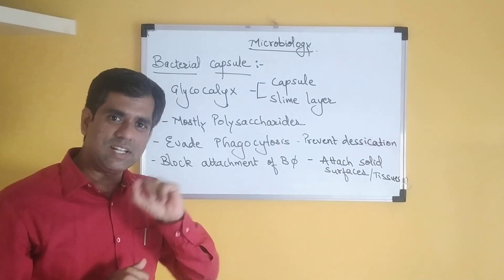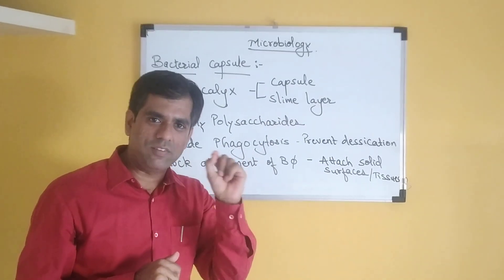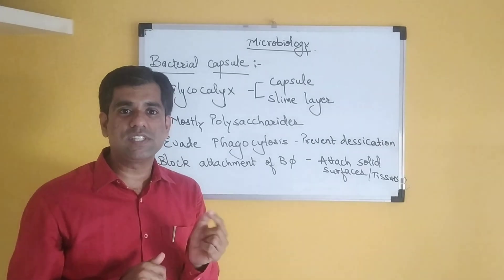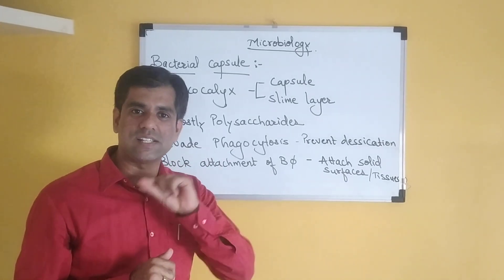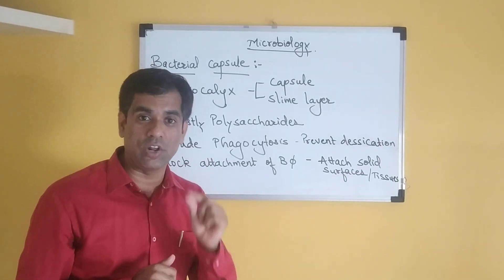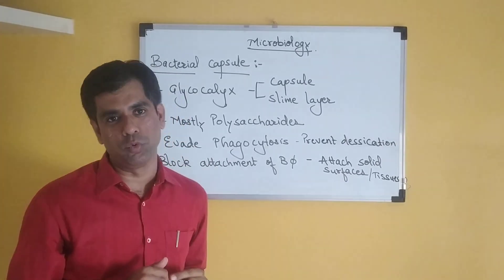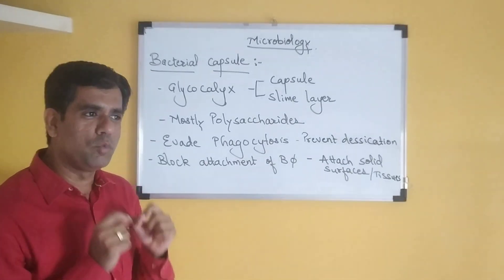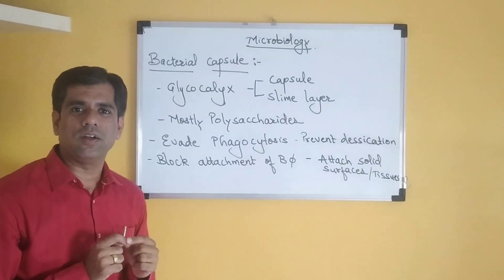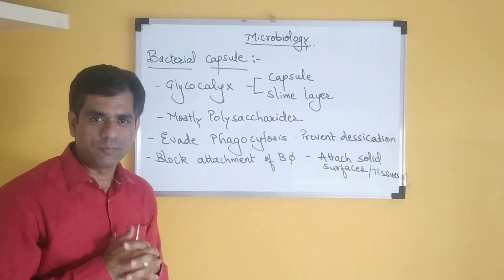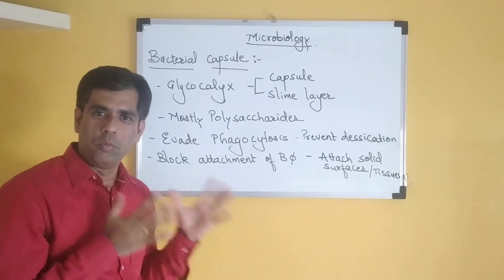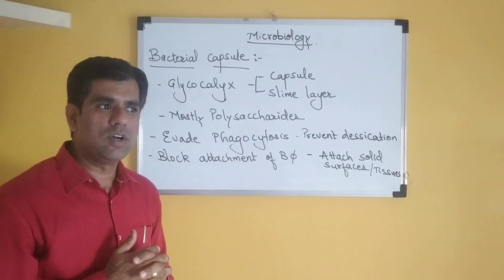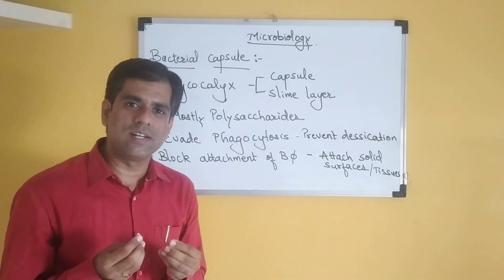Capsule is different from a slime layer because each bacteria will have a separate capsule which is tightly adhering to its cell wall, so it cannot be easily removed. This particular capsule, found in most bacteria, is made of polysaccharide. It may be a homopolysaccharide, it may be a heteropolysaccharide, or a sugar precursor.